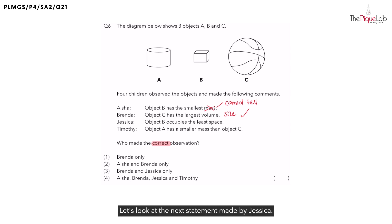Let's look at the next statement made by Jessica. Jessica then observed that object B occupies the least space. Is Jessica right? Yes. From this diagram, we can see that object B has the smaller size and takes up the least space. Therefore, Jessica is correct.